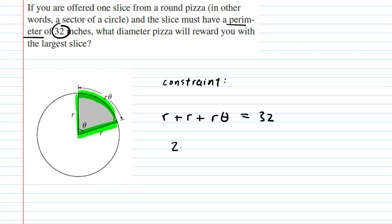Of course, we could simplify this, so we could write 2r plus r theta is equal to 32. So that represents our constraint, and we're going to handle that in just a moment.